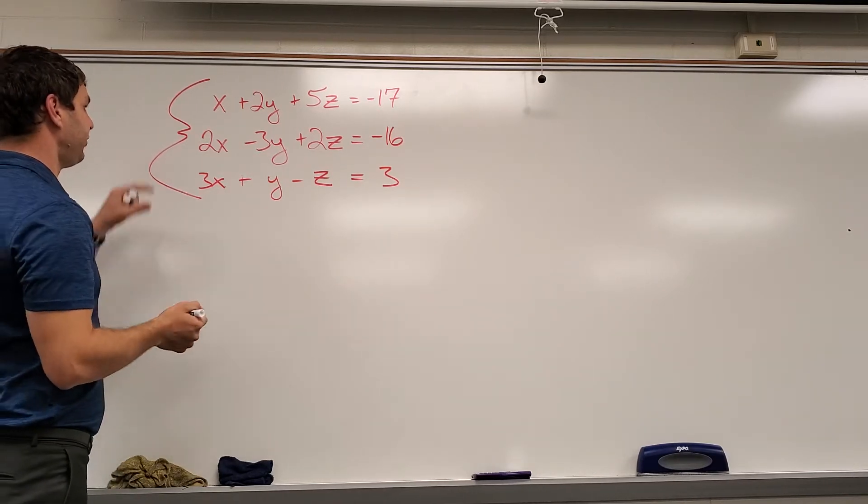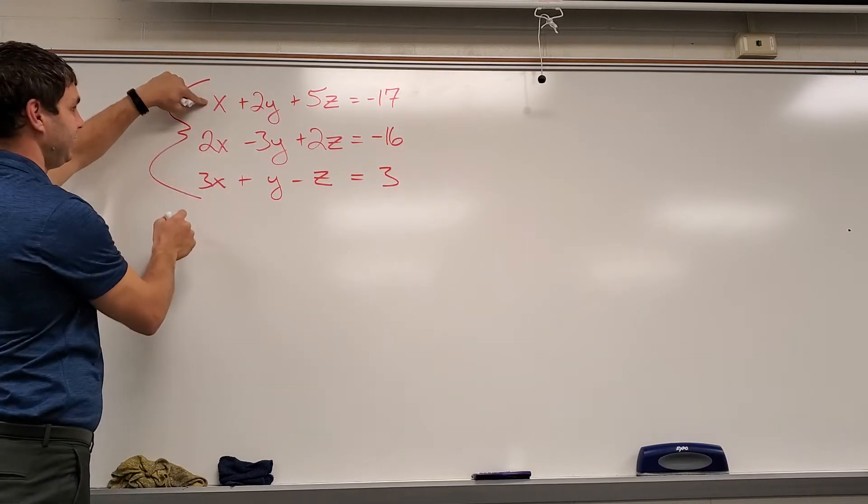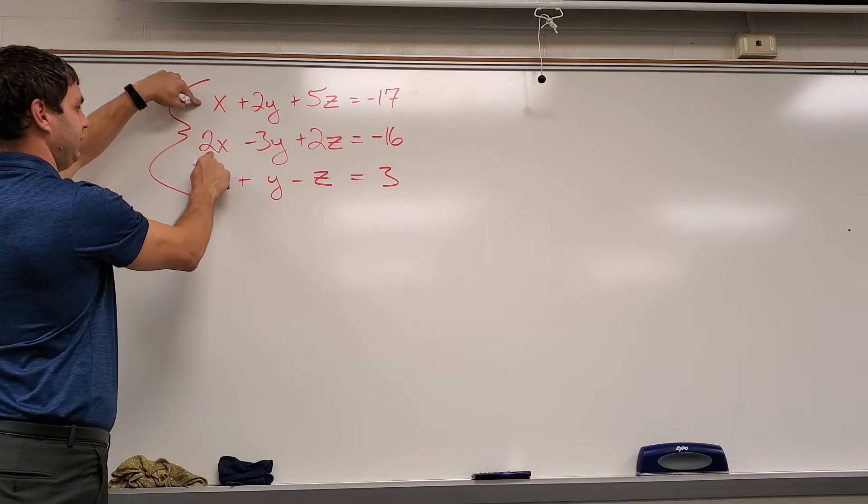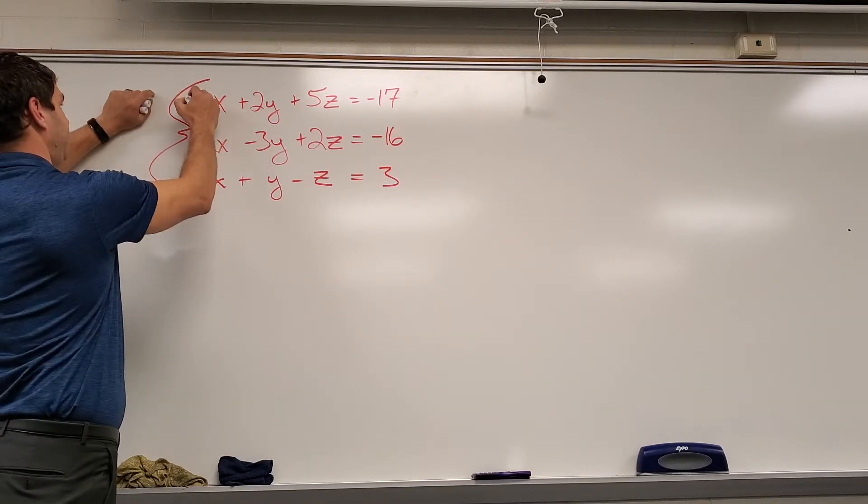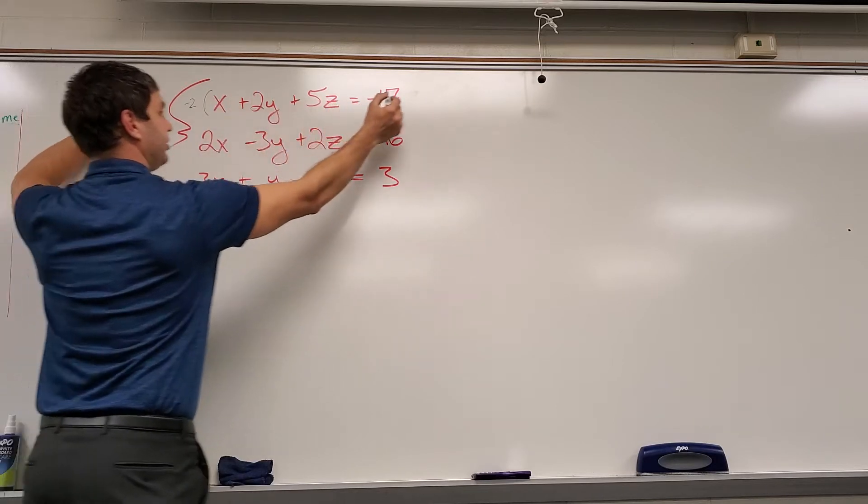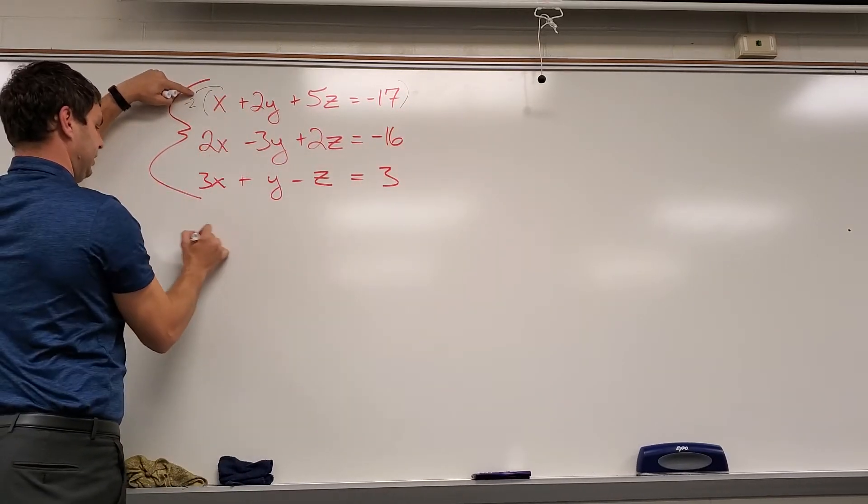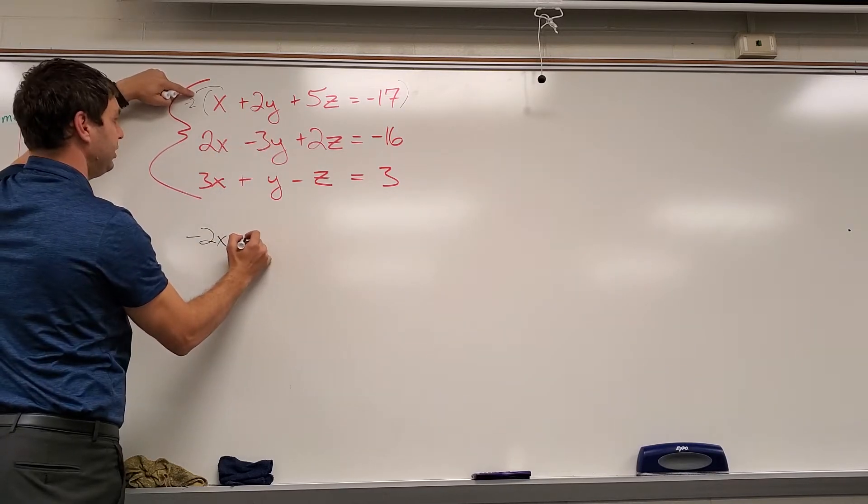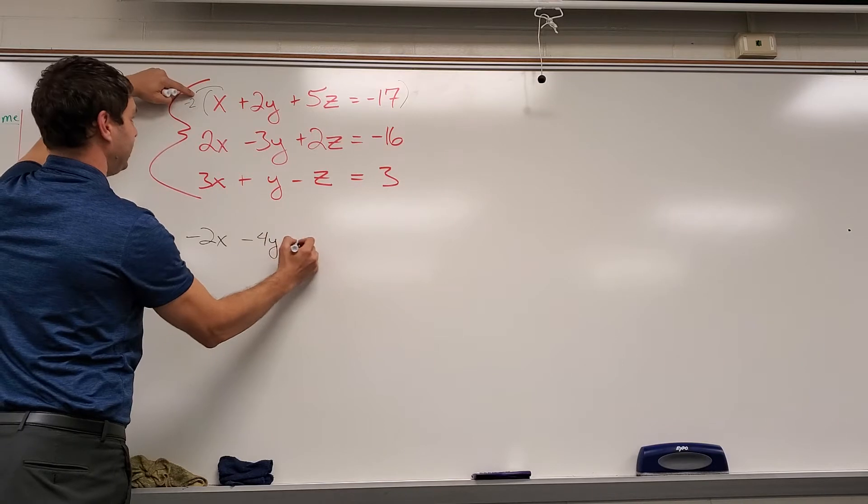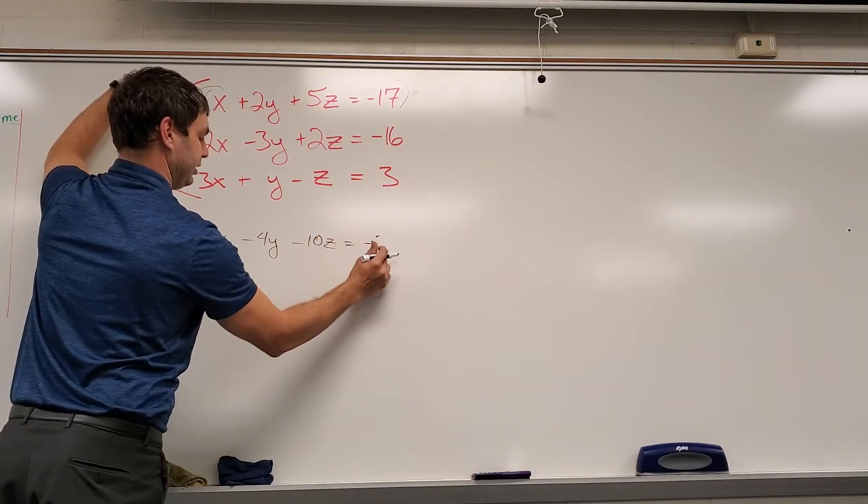So let's do it. Let's first off maybe combine these two. And to do that, I'm going to have to take this top one times negative 2 so that my 2x and negative 2x would eliminate. I'm thinking I'm going to take this times negative 2. I'm just going to do that work down here. Negative 2 times x, negative 2x, negative 2 times 2y, it is negative 4y minus 10z equals positive 34.